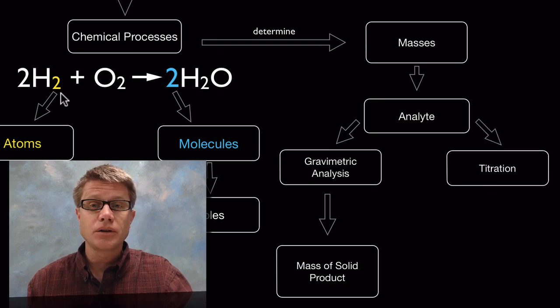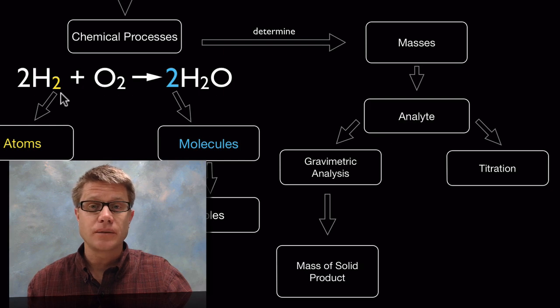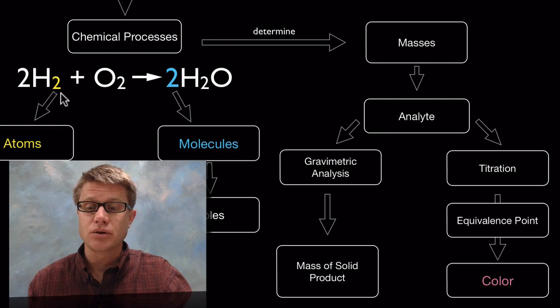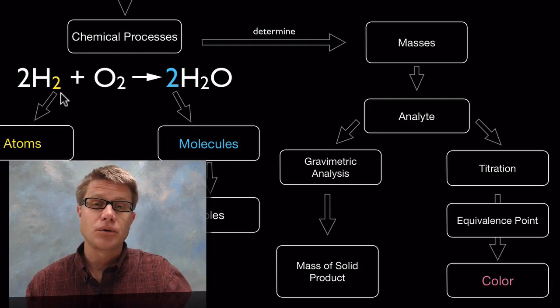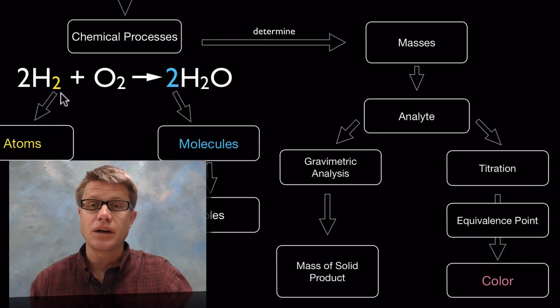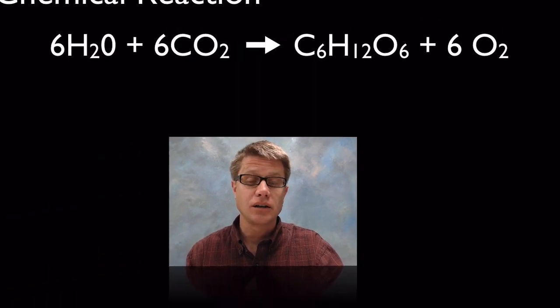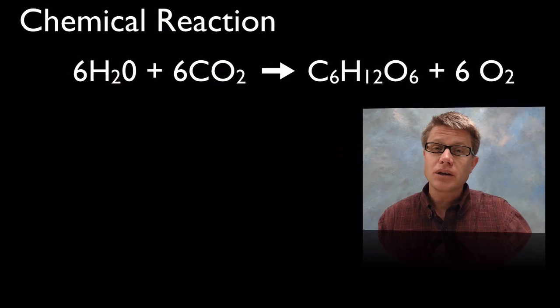A real familiar one in chemistry is the titration. In titration, what we're doing is adding a chemical until we reach an equivalence point. A real common one would be an acid-base titration, where we're looking for a change in color.